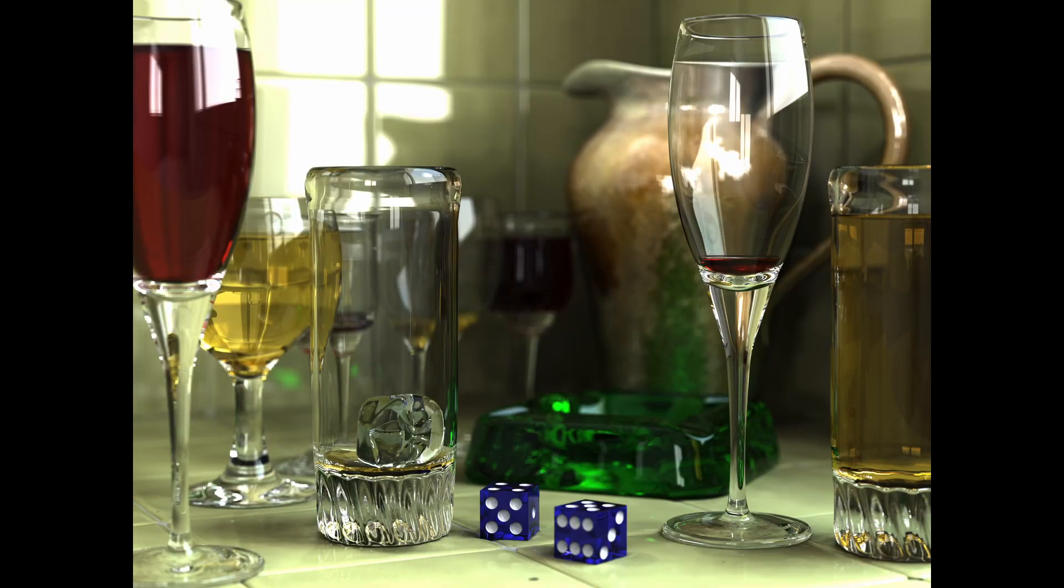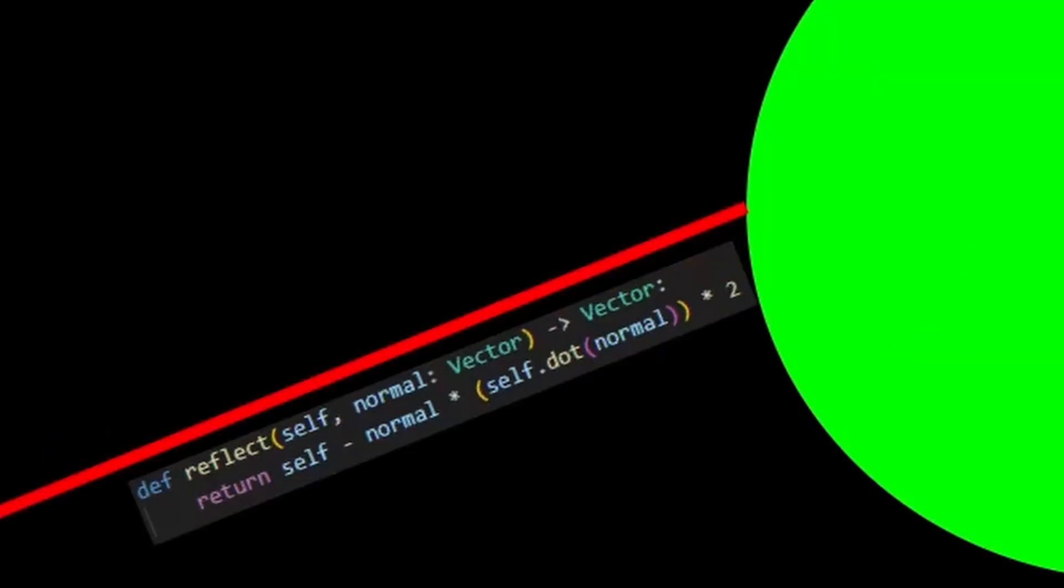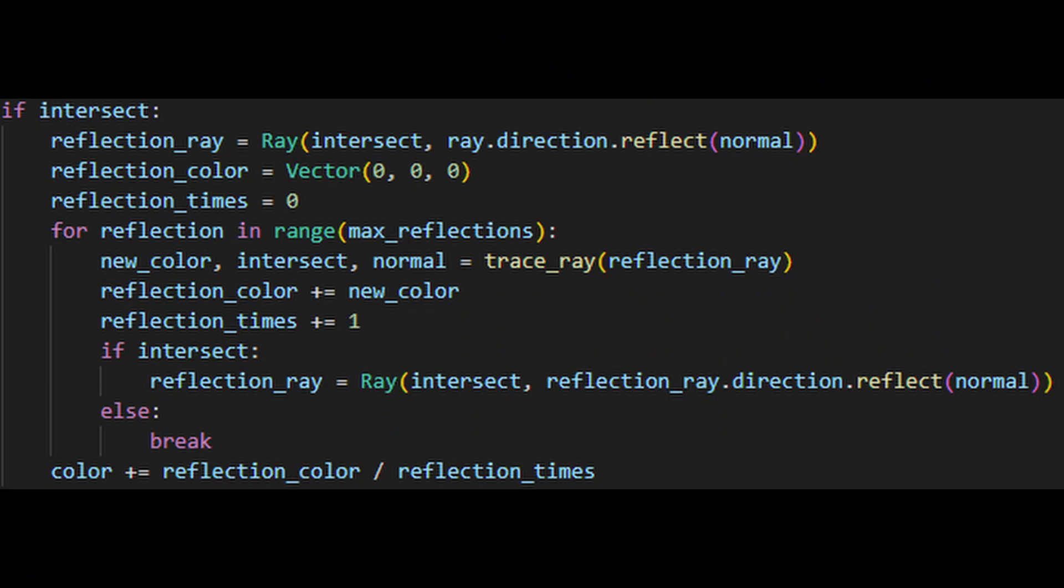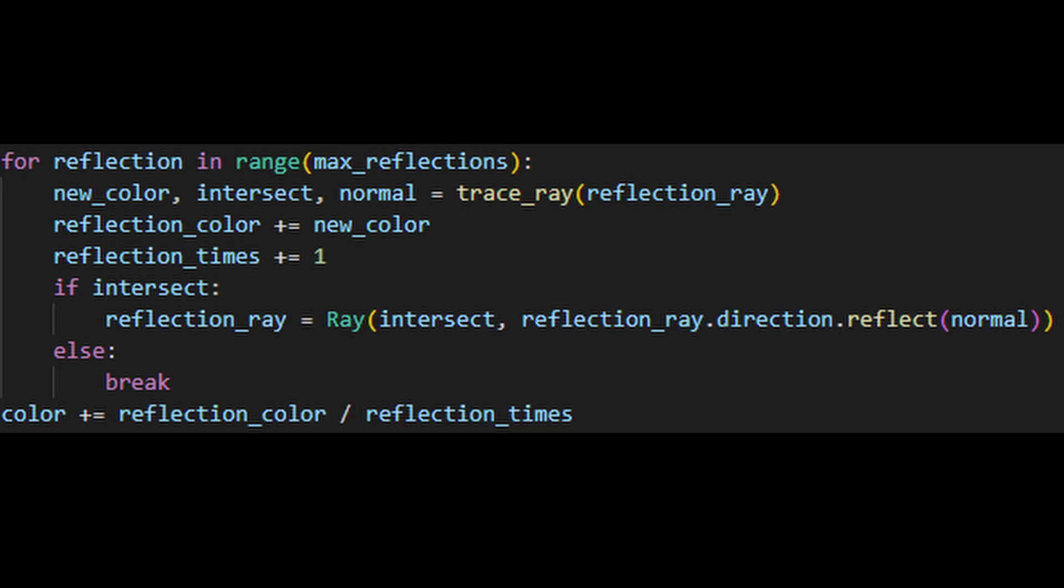Now one of the things that makes a ray tracer, well, a ray tracer is having reflections on everything. To make reflections, you bounce a ray using a formula involving the normal from earlier and the starting ray. This is pretty easy to implement by just creating a loop and adding the color based on every reflection.